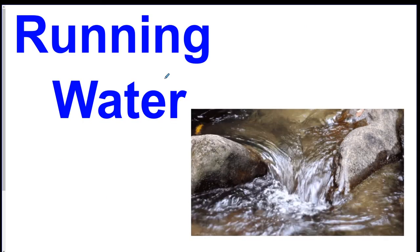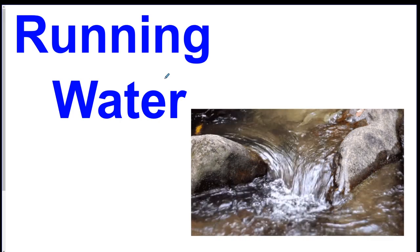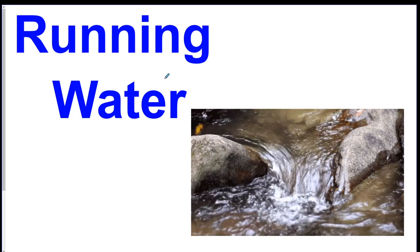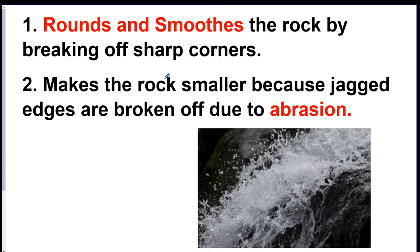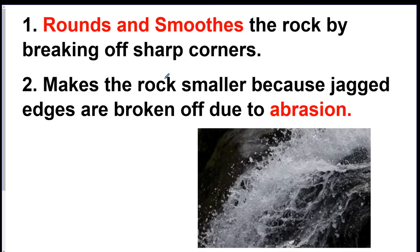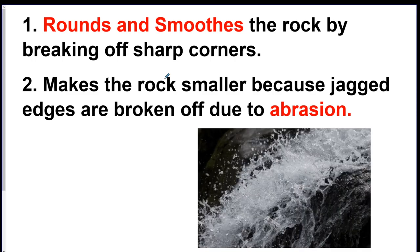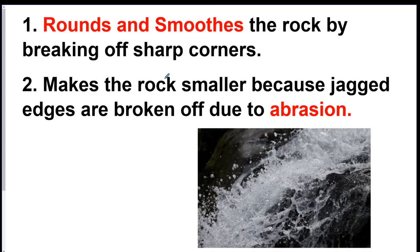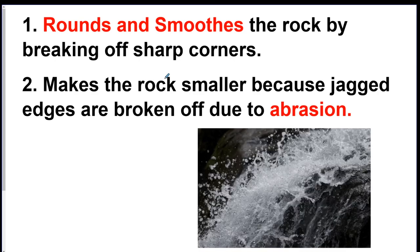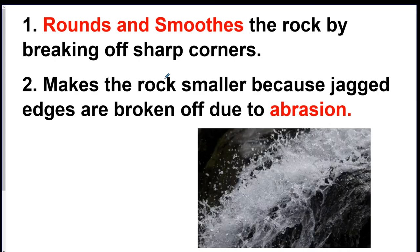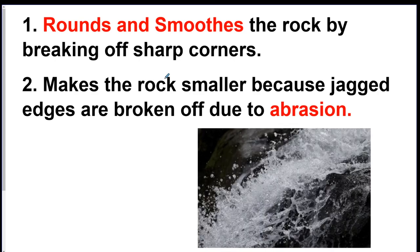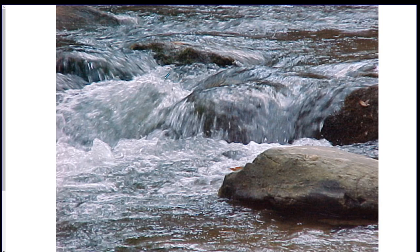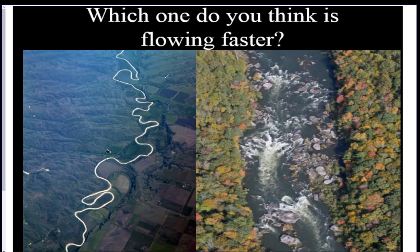The third agent of erosion — after gravity and wind — is water. There are really only two key facts about water erosion. Water rounds and smooths rocks as it moves them, because the sharp edges get chipped off through abrasion. So generally, rocks found in water are rounded.